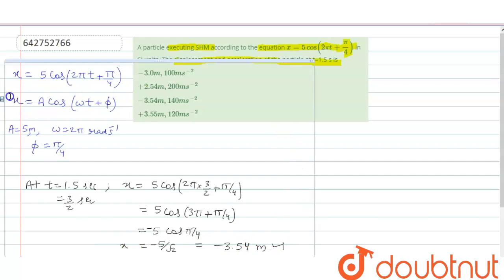Now we have to find out acceleration. If we have displacement is this one, then acceleration will be minus omega square x.